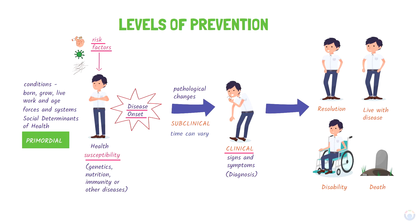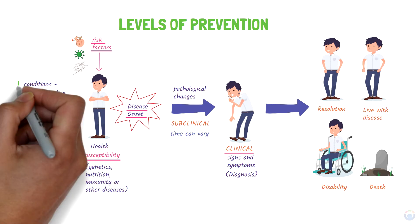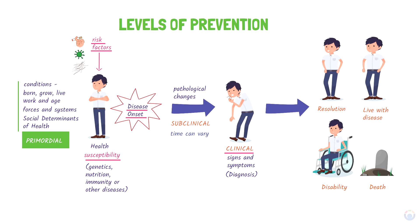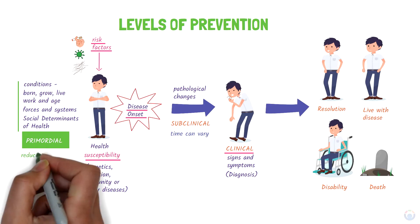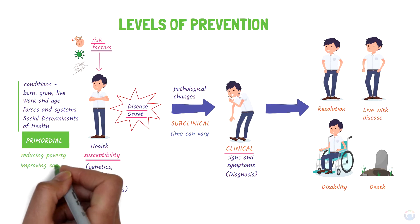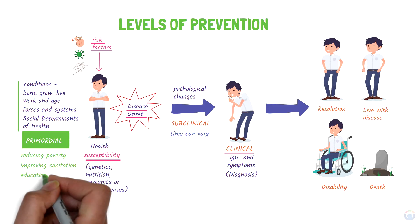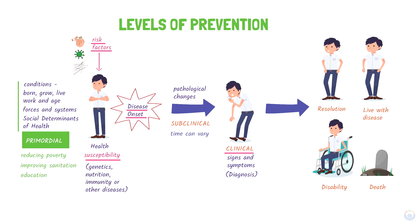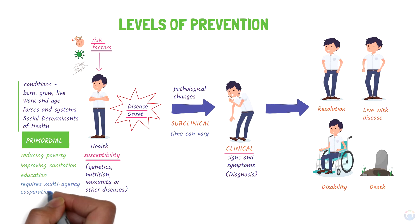Primordial prevention addresses the broader determinants of disease in order to prevent the emergence and establishment of the social, economic, cultural, and environmental influences that can lead to disease. It includes actions like reducing poverty, improving sanitation, and promoting education. It's a very broad area that requires the cooperation of many sectors outside health, like the finance, education, agriculture, and environmental sectors.